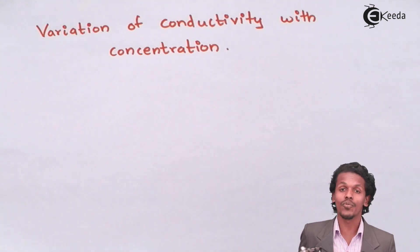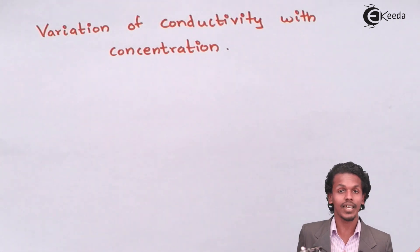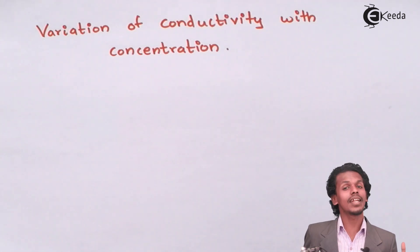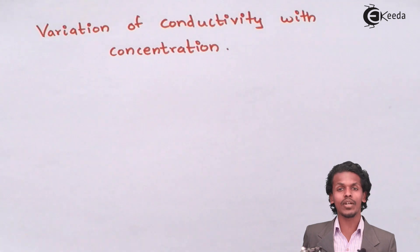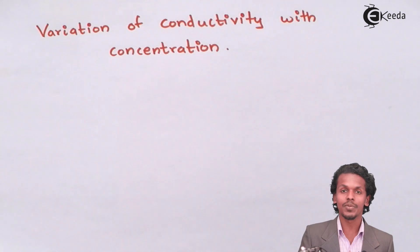But the electrolytes are of two types: a strong electrolyte and weak electrolyte that we have discussed earlier. So when it comes to strong electrolytes, strong electrolytes dissociate very rapidly and because of which the number of ions present in a unit volume also increases. And hence the conductivity of a strong electrolyte rapidly increases.